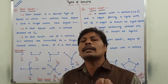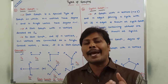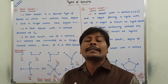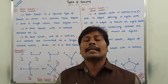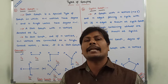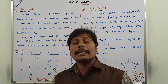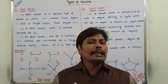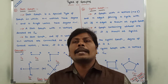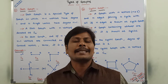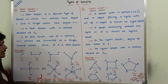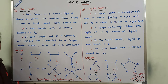In a star graph, out of n vertices, n minus 1 vertices are connected to a single central vertex. That type of graph is called a star graph. A star graph with n vertices is denoted by S suffix n. A star graph of order n is denoted by S suffix n.